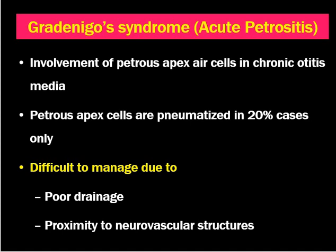This is defined as involvement of the petrous apex air cells in chronic otitis media. The infection from the middle ear reaches the petrous apex cells, leading to inflammation and abscess formation there. The petrous apex cells are pneumatized in only 20% of cases, so there is a 20% chance of inflammation of the petrous apex, but it is a very rare condition.